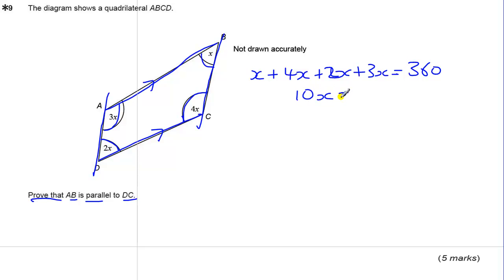So we've got 10x is 360. So x equals 360 divided by 10, which is 36 degrees.